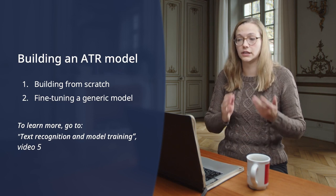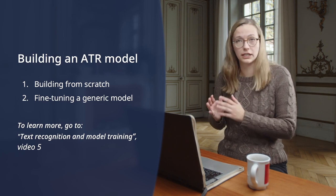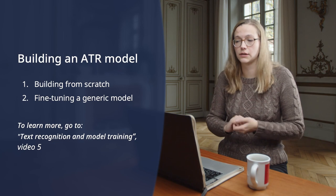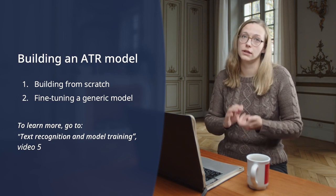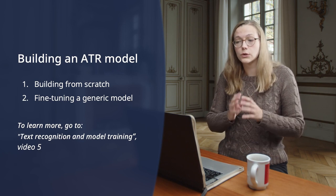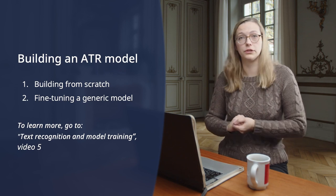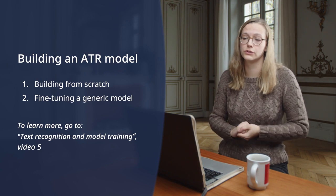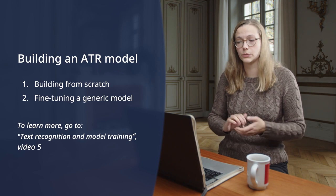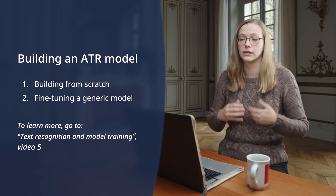Model training is at the core of the ATR process. There are two options to train a model: either create a new model from scratch, or enhance an existing model by fine-tuning it for your own sources. Building a model from scratch demands a substantial volume of training data, which can amount to over 100 pages of manually transcribed text, especially when your corpus is very diverse. It involves a significant investment in terms of time, computing resources, and technical expertise. Fine-tuning a model involves incorporating your own data into a generic ATR model, customizing it to suit your specific corpus. There are several sites and repositories where you can find pre-trained models, such as Zenodo or HTR United. To go further, see the video called Text Recognition and Model Training.